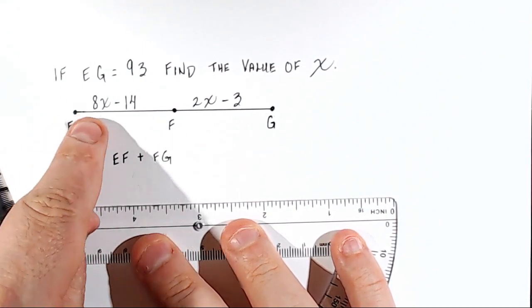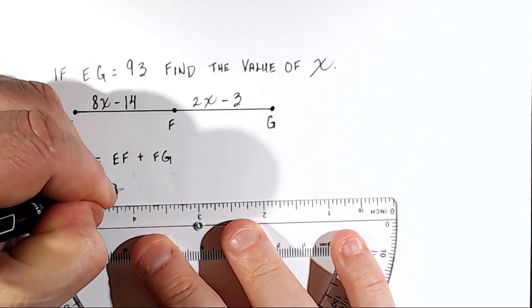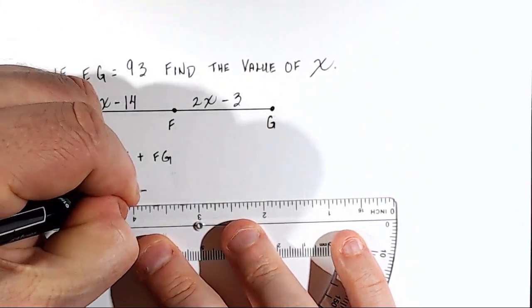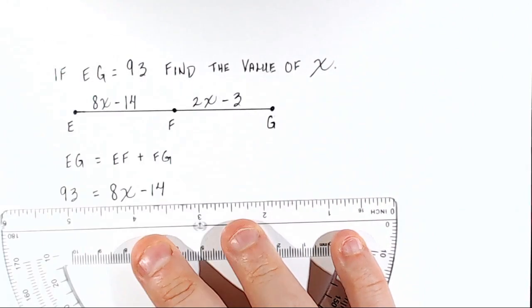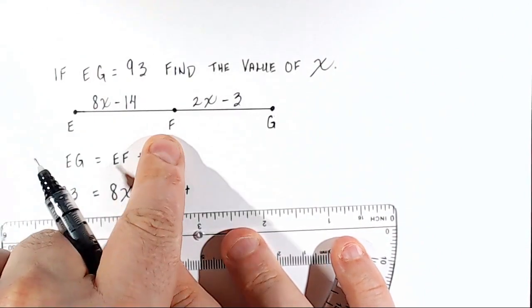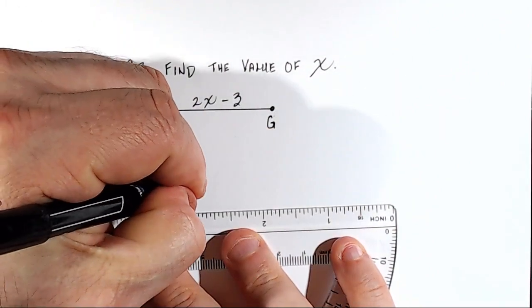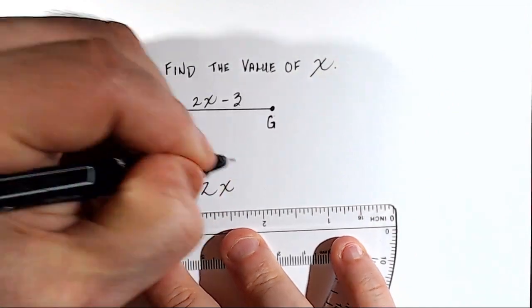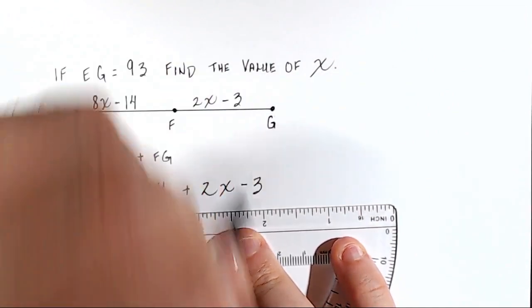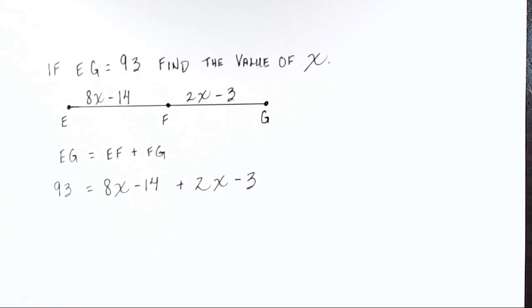Okay, EF, segment EF, which is 8X minus 14, 8X minus 14, plus the distance from F to G, which was 2X minus 3, 2X minus 3. Okay? So now we just see that we have a little algebra problem to solve.